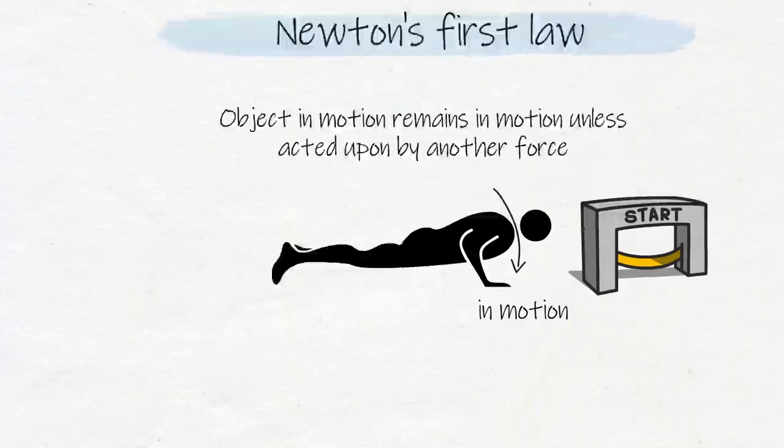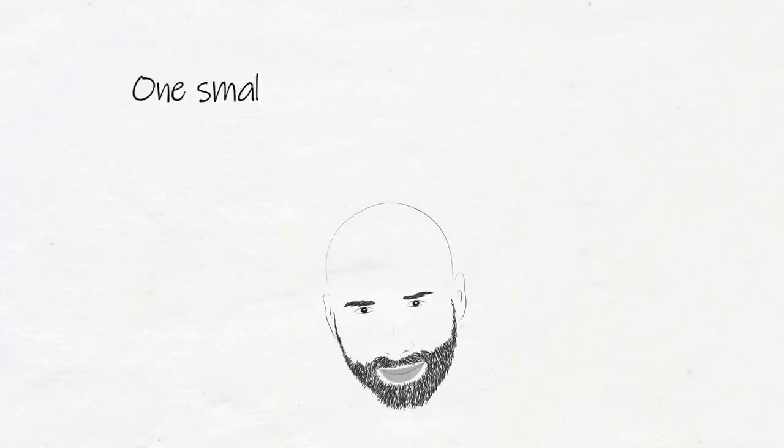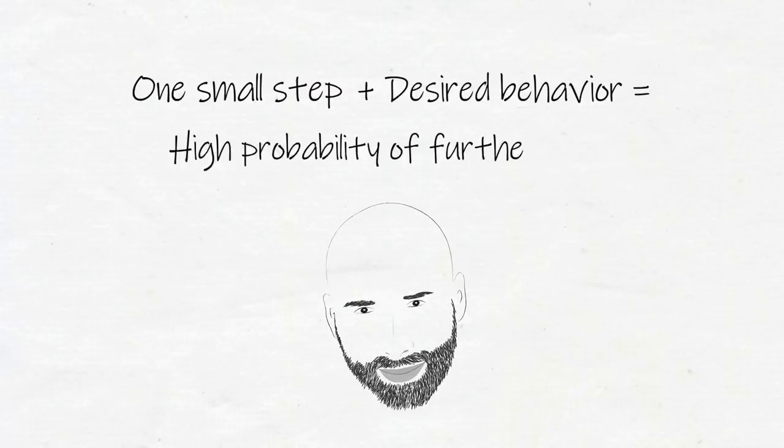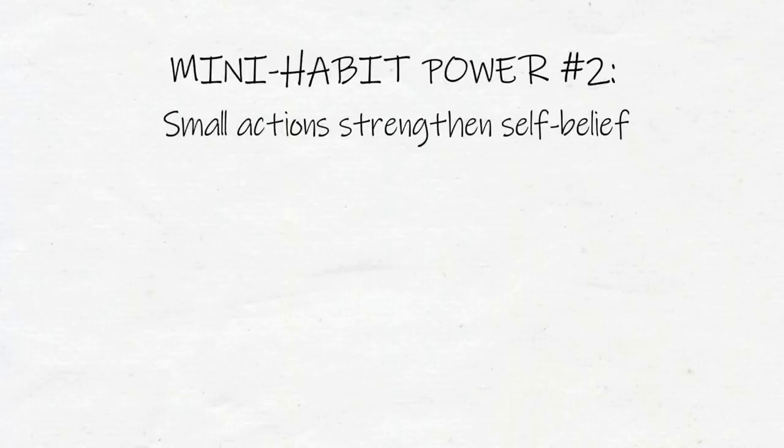However, Guise has created his own equation to explain this phenomenon. One small step plus desired behavior equals high probability of further steps. Mini habit power number two: small actions strengthen self-belief, which generates a willingness to change.